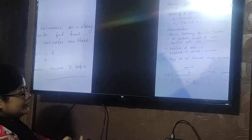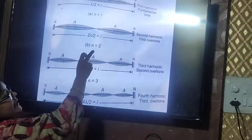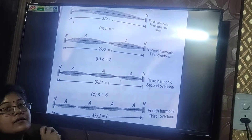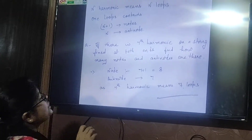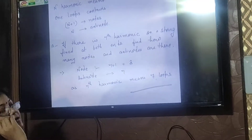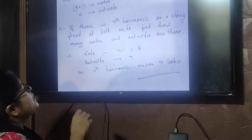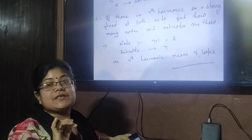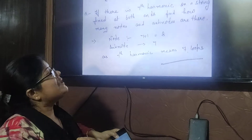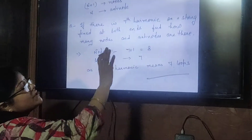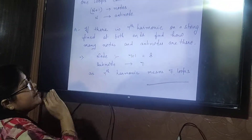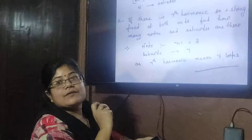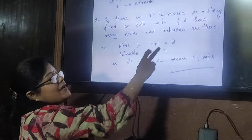Here is an example: there is a 7th harmonic on a string fixed at both ends, forming standing waves. You need to find how many nodes and anti-nodes there are. I have told you that for the nth harmonic there are n loops. So for the 7th harmonic, the number of anti-nodes is also 7, and the number of nodes is n plus 1, which is 7 plus 1 equals 8.